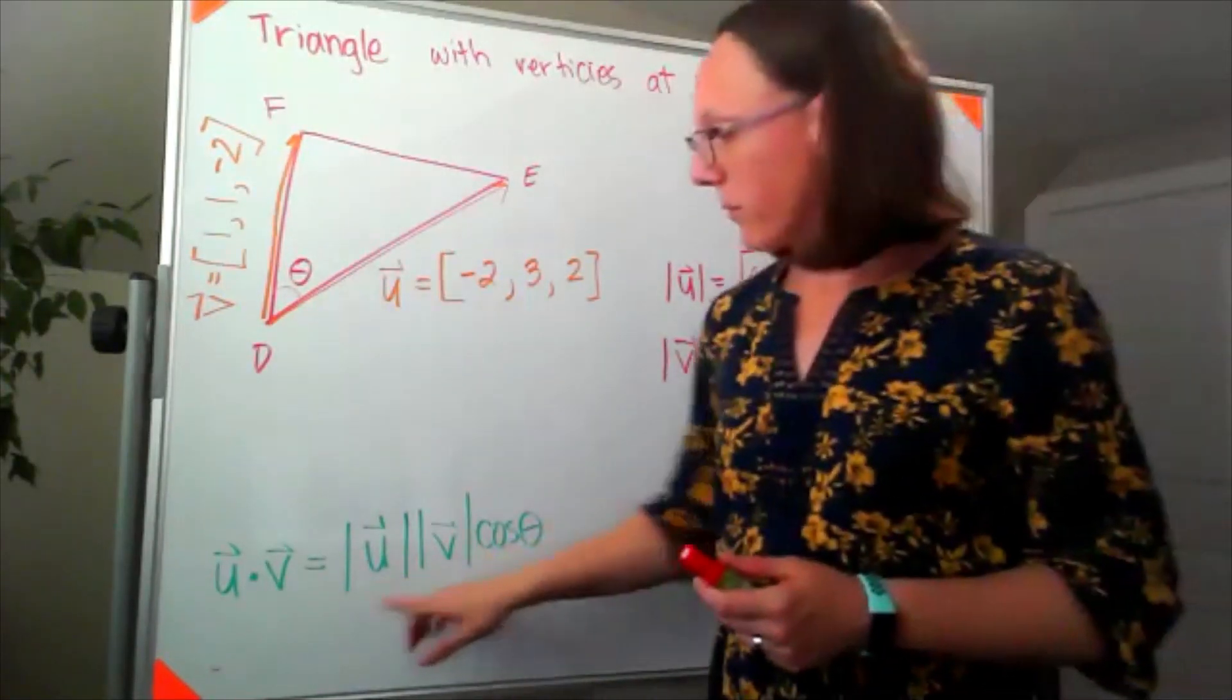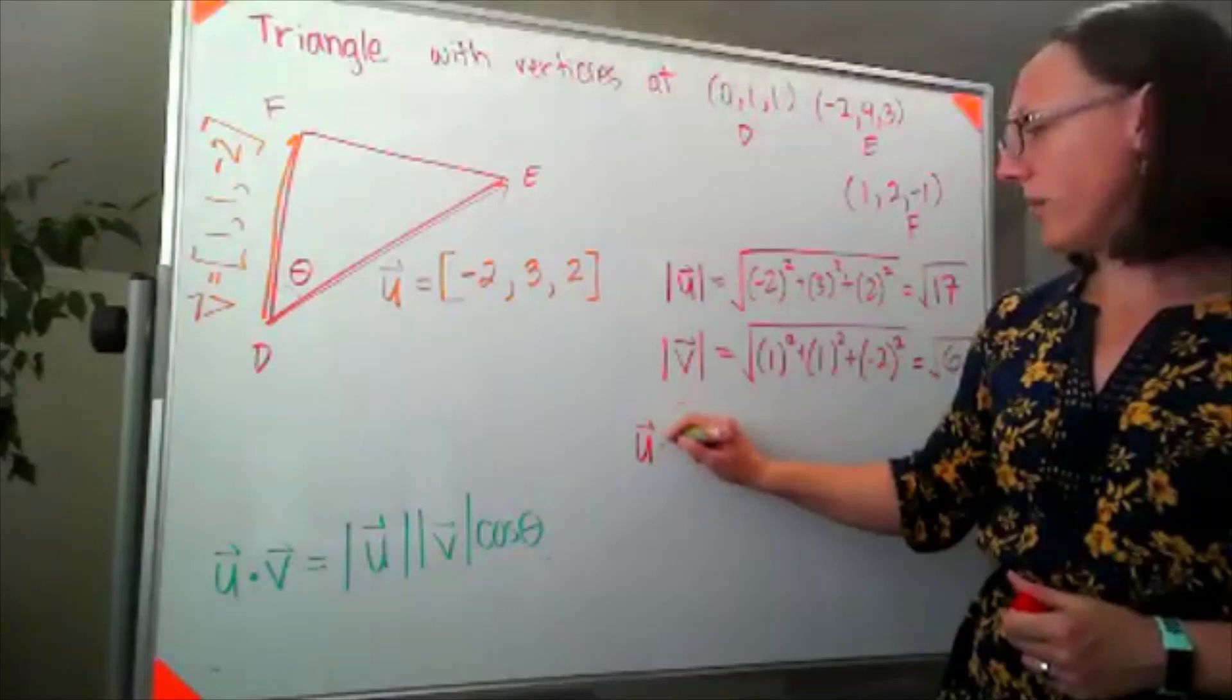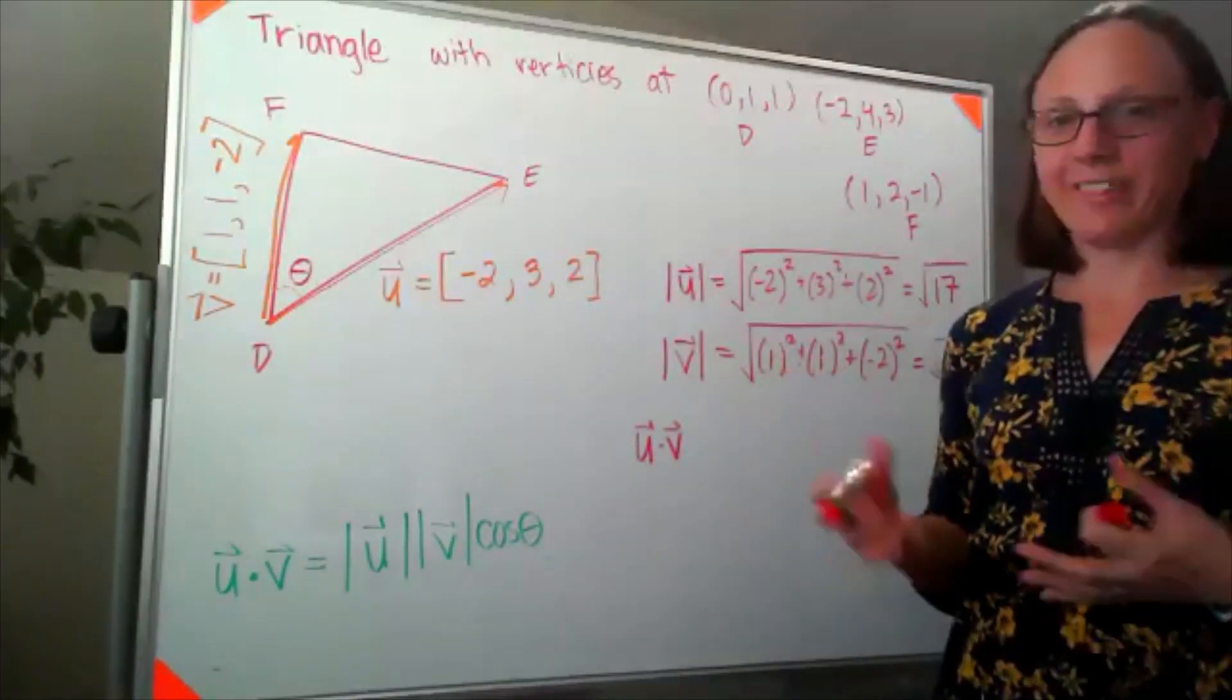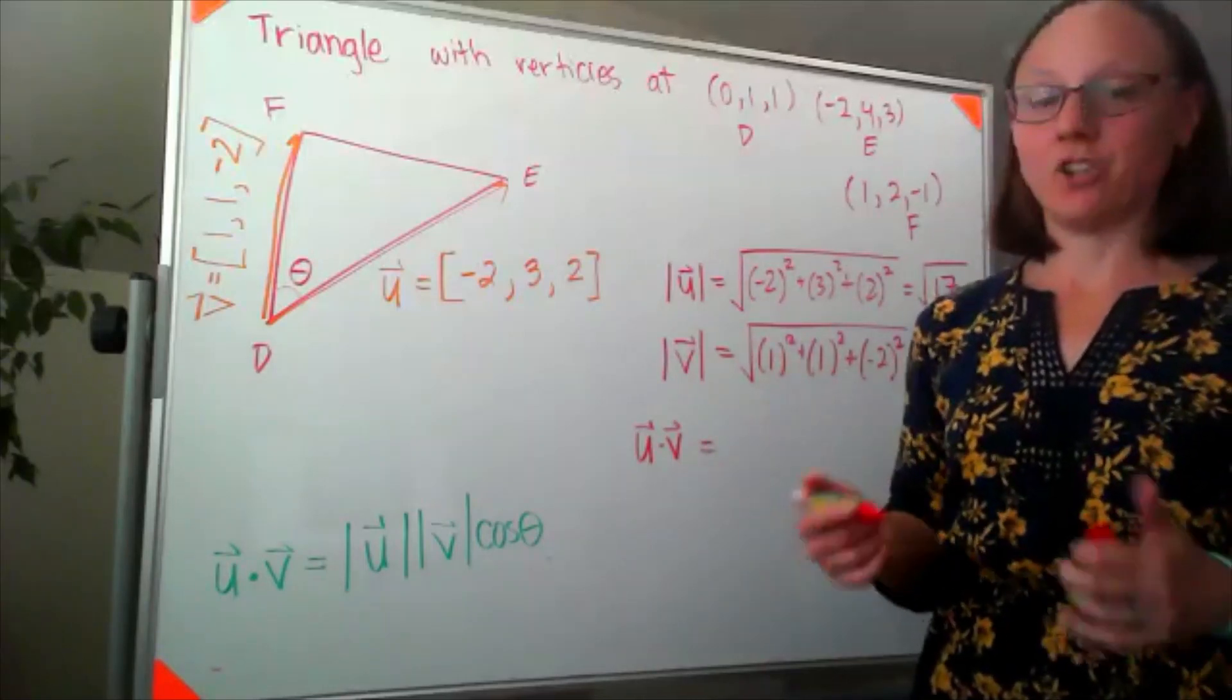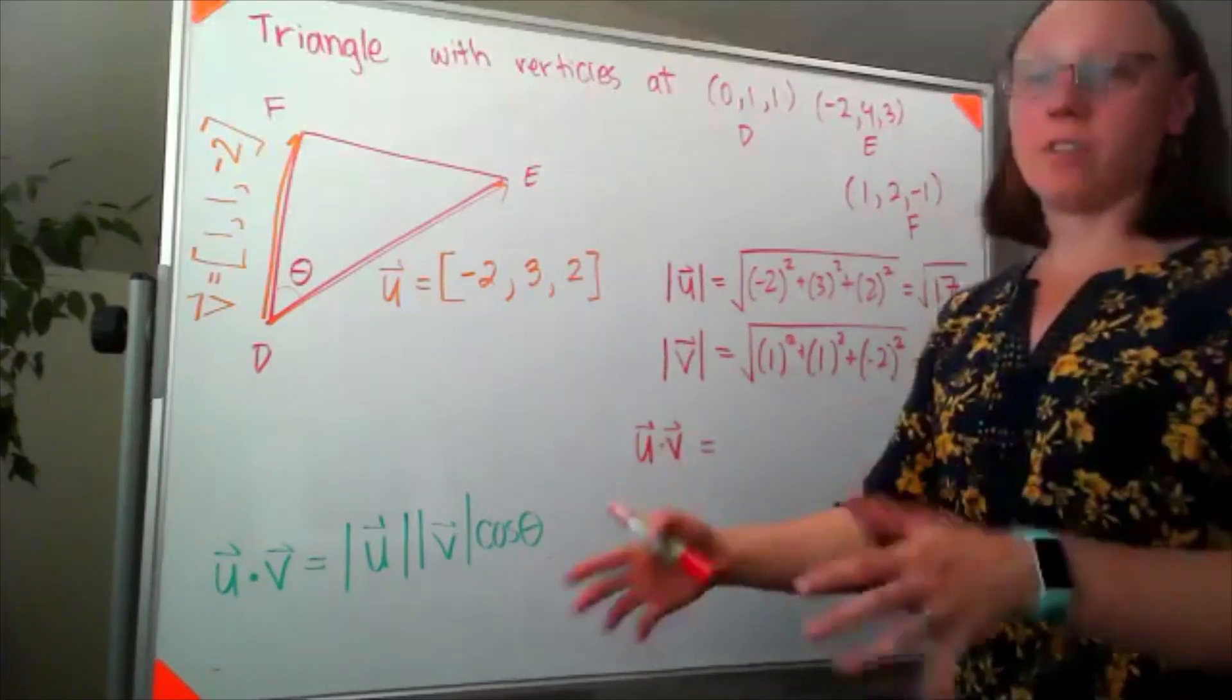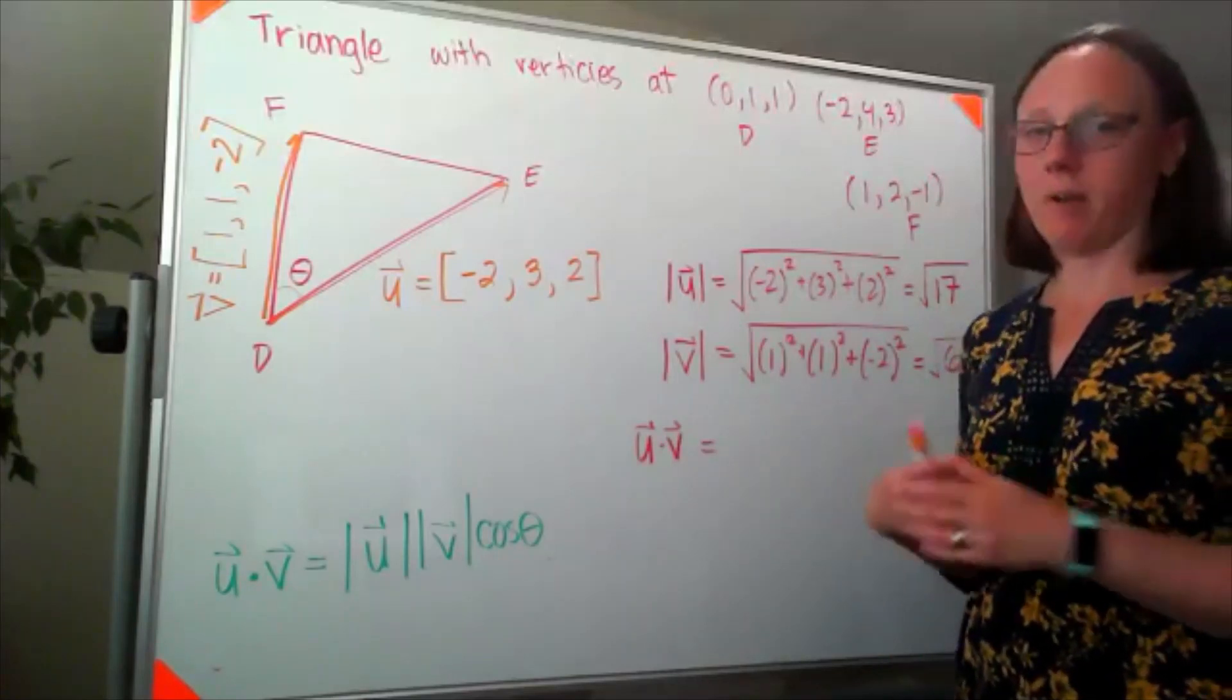The next thing that I need for my formula is the dot product. When we find u dotted with v, yes we could multiply it out the long way like I did in the previous problem, but I didn't want you to take notes on that because in general we're not going to do it the long way. Instead we're going to multiply the components pairwise and add them.